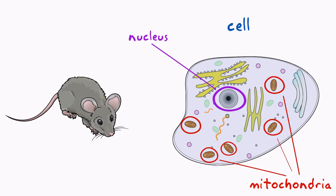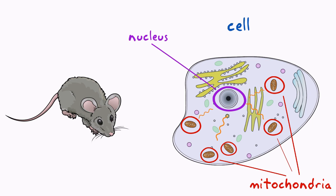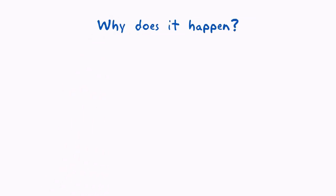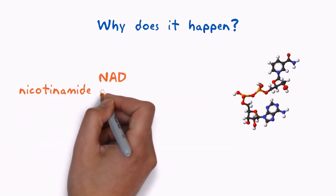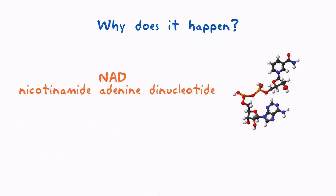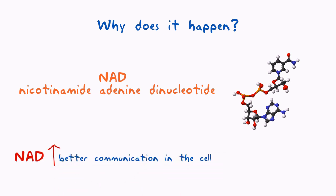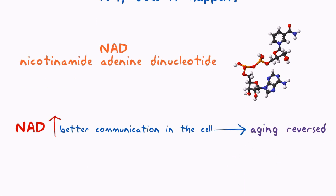The study found that by restoring this molecular communication, aging could not only be slowed, but could be reversed. Responsible for this communication breakdown is a decline of the chemical NAD. This chemical reduces in the body as we age. By increasing amounts of a compound used by the cell to produce NAD, the researchers found that they could quickly repair mitochondrial function, and that led to the radical reverse in the aging of the mice.